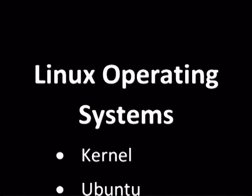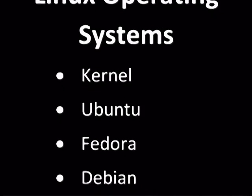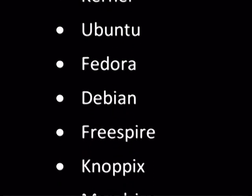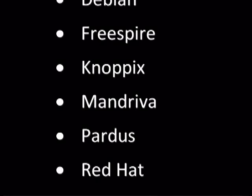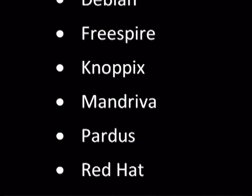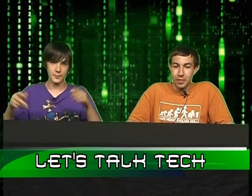The Linux operating systems include Kernel, Ubuntu, Fedora, Debian, FreeSpear, Knoppix, Mandriva, Puppy, and Red Hat — that's some of them. There are a lot more; I had to edit the list because it was so long. There are thousands — people went in, customized it, and threw it online for you to download. Those are just some of the well-known ones.